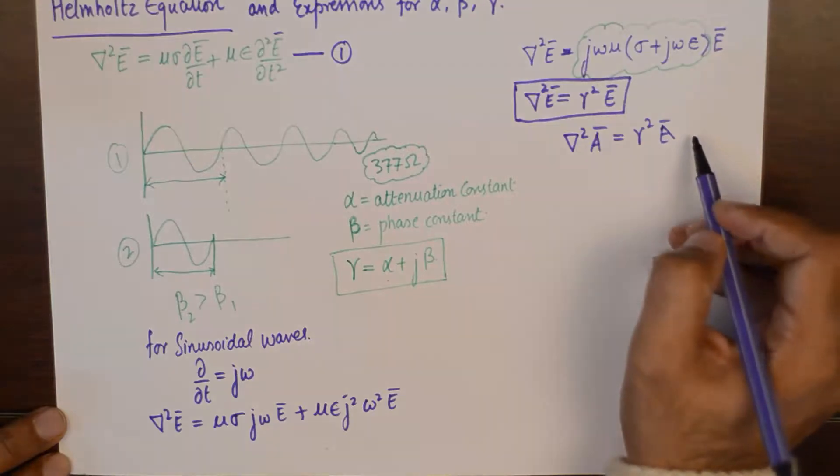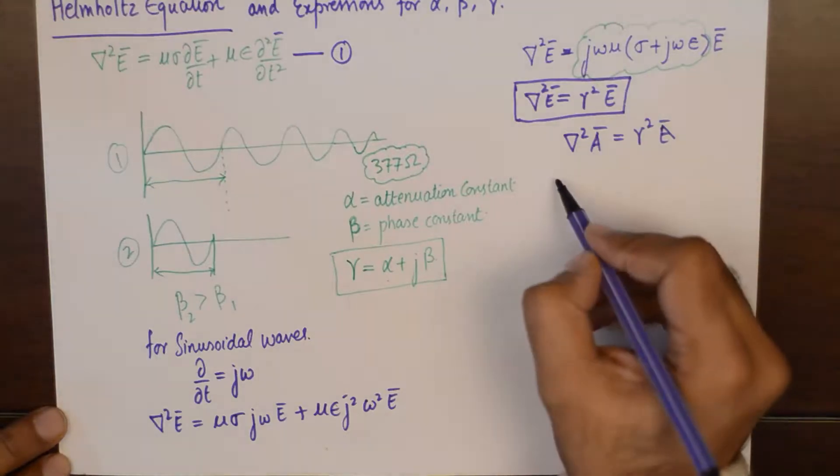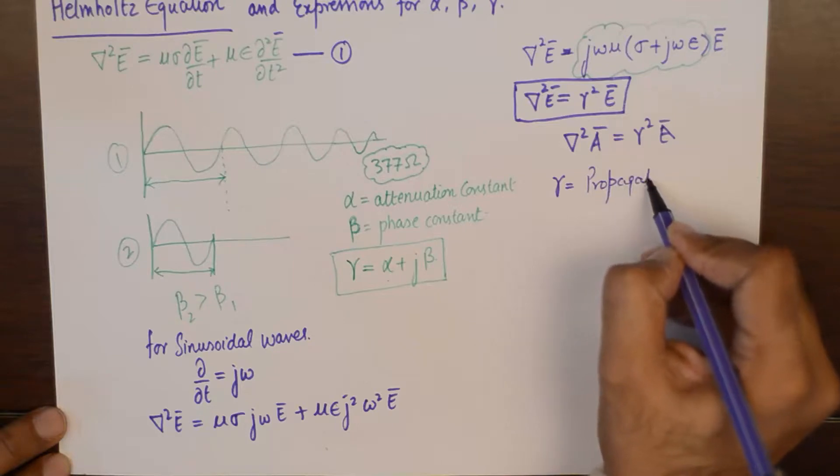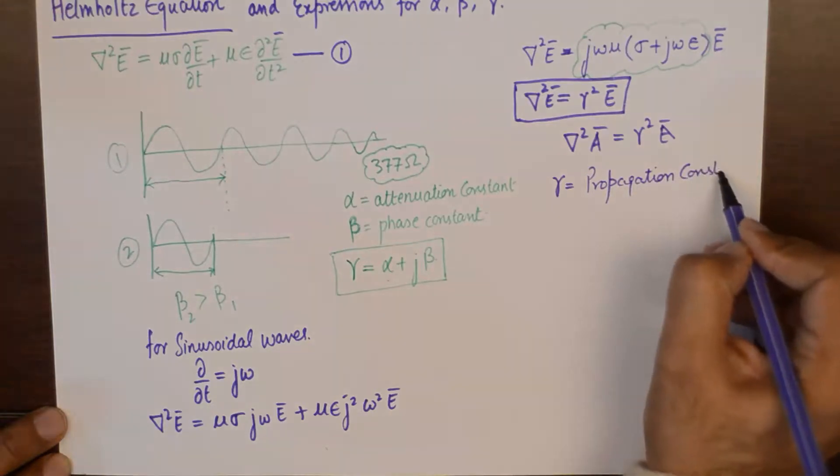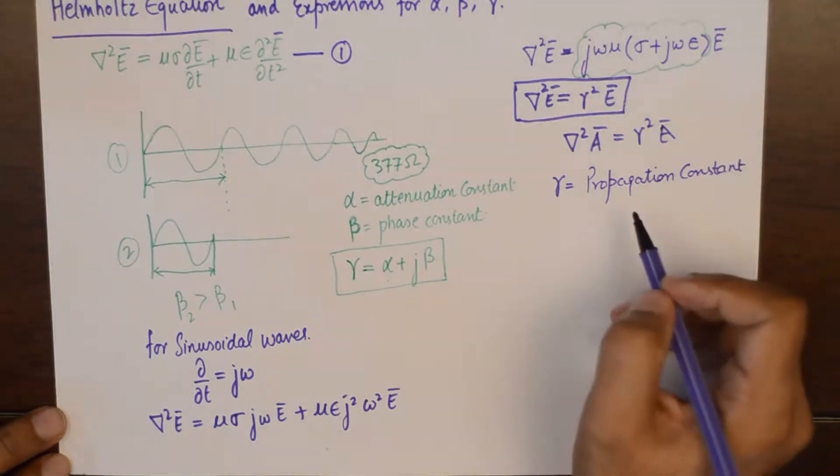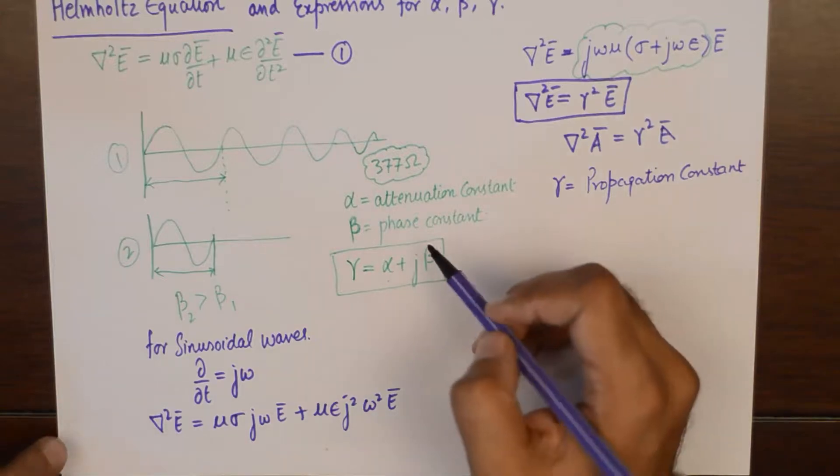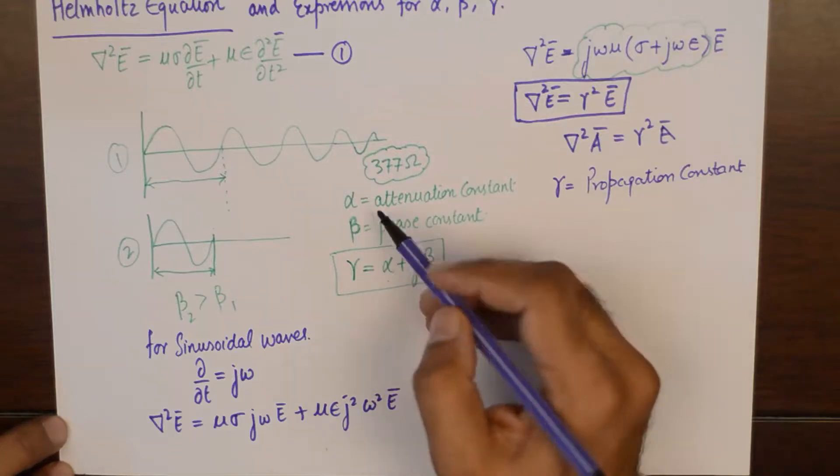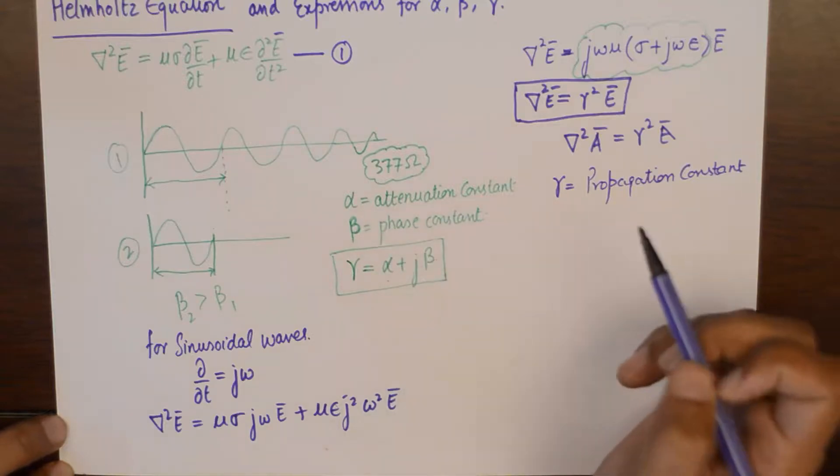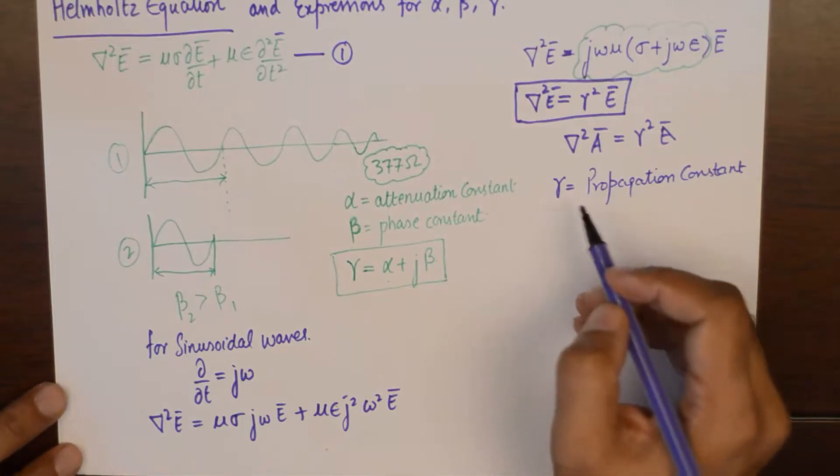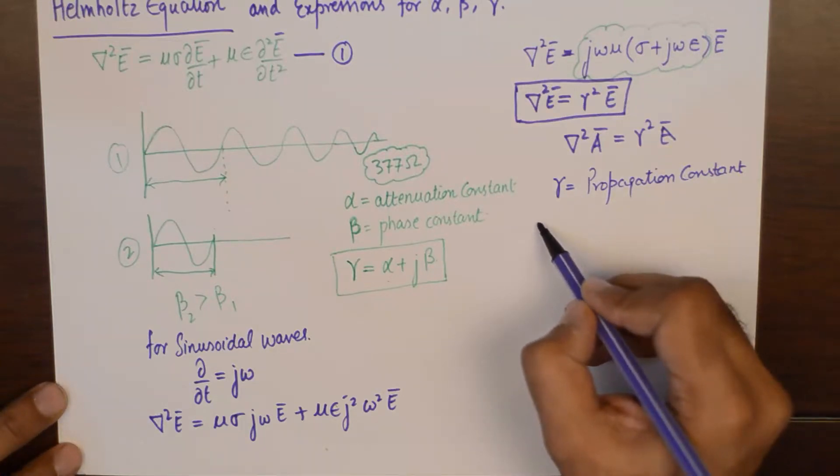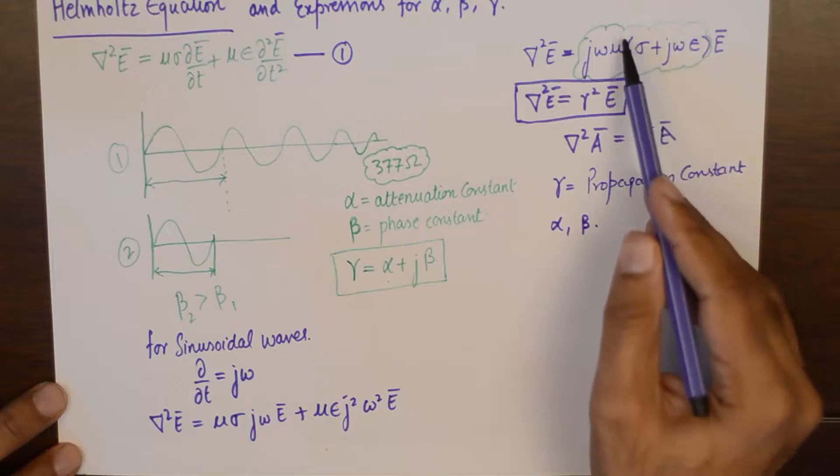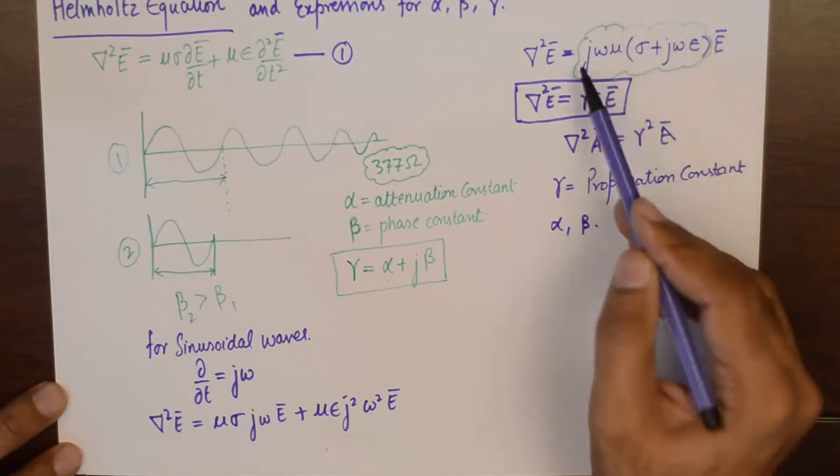Where of course gamma is the propagation constant. We have already discussed about propagation constant as the sum of attenuation constant and phase constant. Any propagation should have these two fundamental properties. So now our job is to find out the value of alpha and beta from this mammoth term.